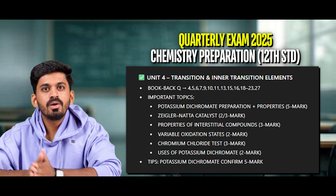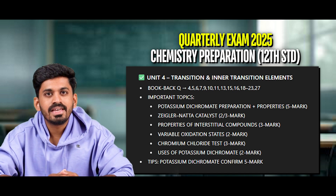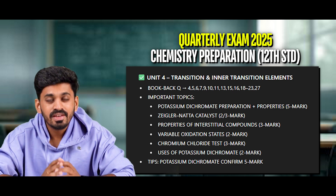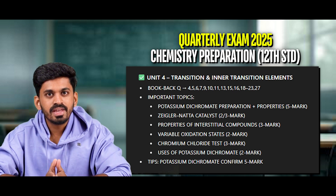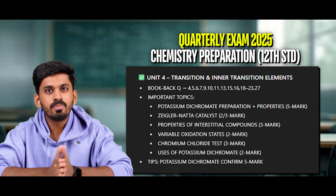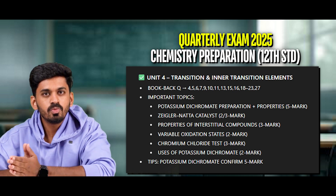These are important questions: 4, 6, 7, 15 — these are 5 marks. Now we will see how to book it. Potassium dichromate preparation and properties — this is a 5 mark question.